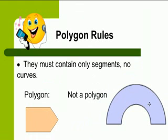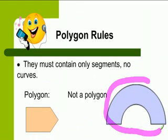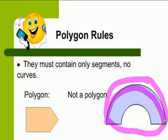So, because it has to be straight lines, this is not a polygon. It's not a polygon because it has these curved lines. All lines have to be straight.